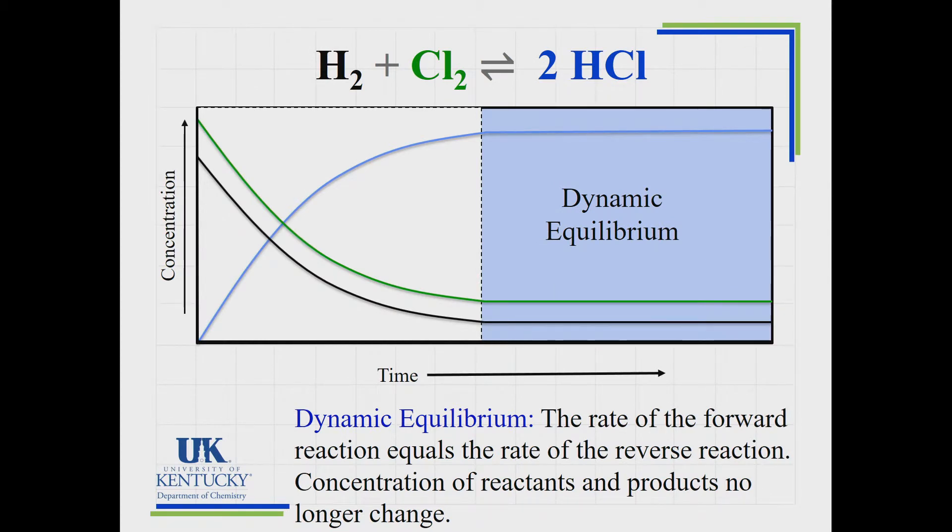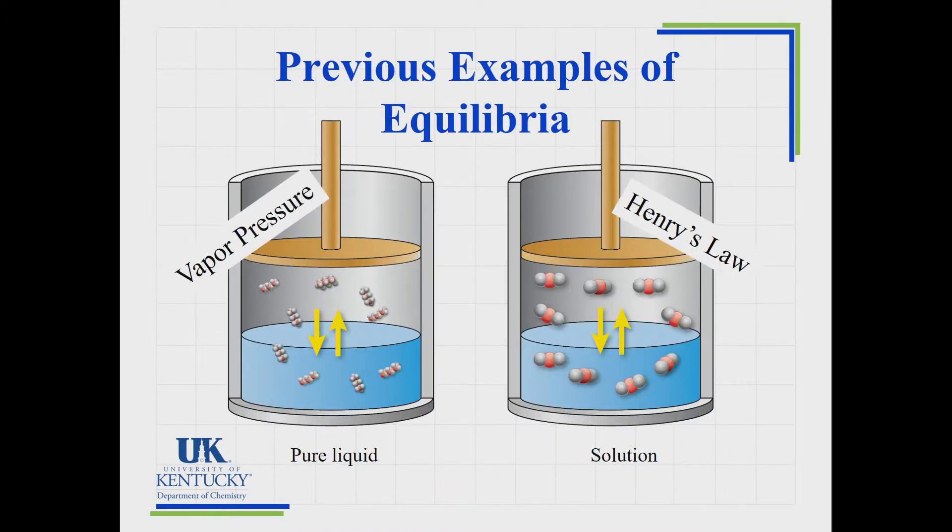With dynamic equilibrium, the rate of the forward reaction and the rate of the reverse reaction are exactly the same. They're equal. The concentrations of the reactants and the products are not going to change. You see nice straight lines once you've reached that dynamic equilibrium. They're not equal to each other. We just know that once equilibrium is established, however much there is in there, it's not going to change as time goes by.